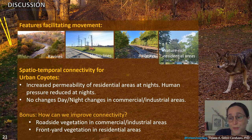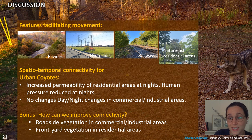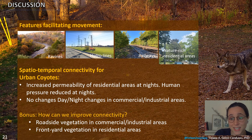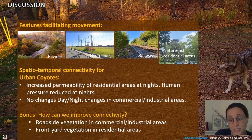If I leave you with anything after this presentation, it's: how can we improve connectivity in our cities? Vegetation makes a big difference. Front yard vegetation and urban vegetation are a tiebreaker. If there is anywhere the city can influence connectivity, it is by increasing vegetation in front yards — and this is something that the city can do.